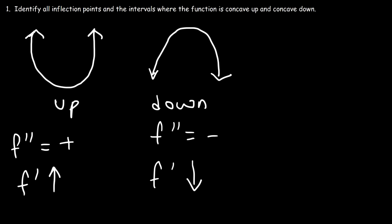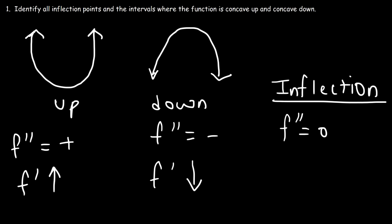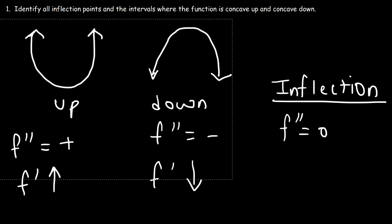To determine the inflection point: the inflection point occurs when the second derivative is equal to zero. But there's something else that must occur as well — at the inflection point, the concavity must change, either from negative to positive or positive to negative. Let me give you some examples.